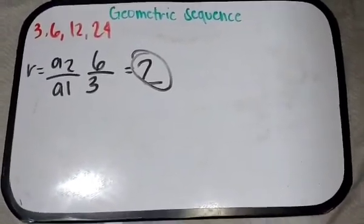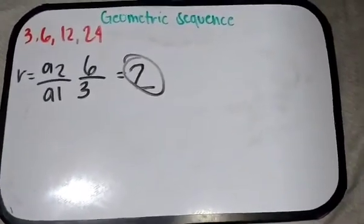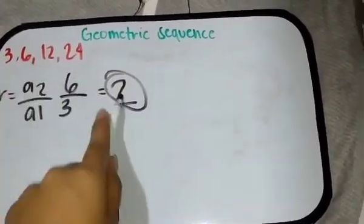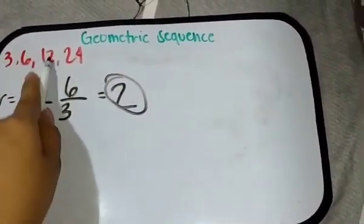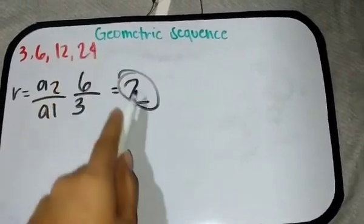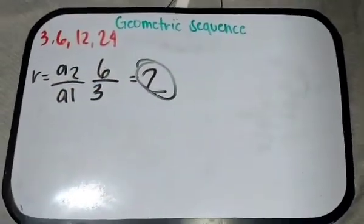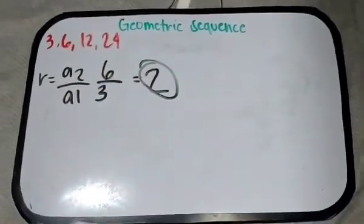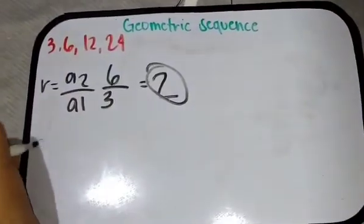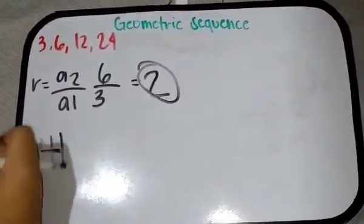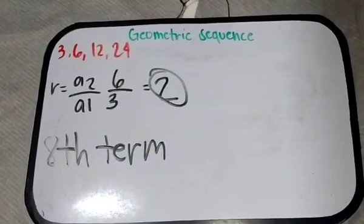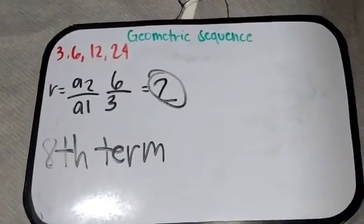Dahil alam na natin ang common ratio, we can easily identify kung ano yung mga susunod na term: 3 times 2 is 6, 6 times 2 is 12, 12 times 2 is 24, 24 times 2 is 48. So, ayun yung susunod na term. But what if ang hinahanap na term ay the 8th term? Siyempre, Hindi na natin gagamitin ang manual method, kaya gumamit ng formula.